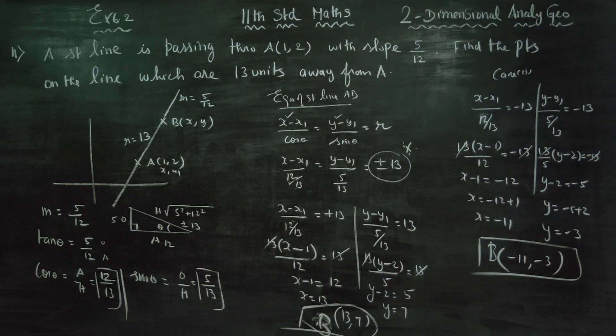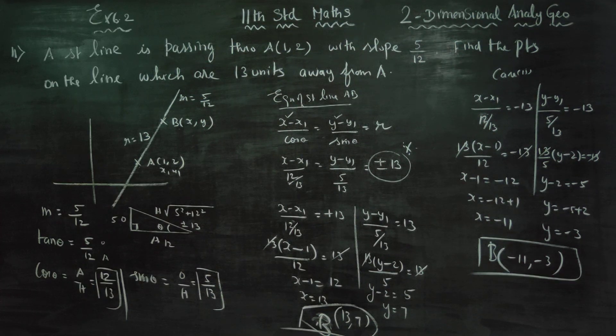The two points on the line which are 13 units away from A are (13, 7) and (-11, -3). Thank you.